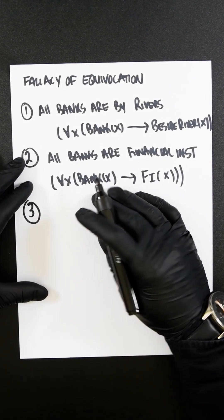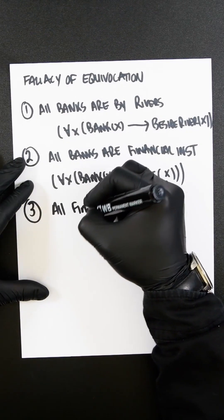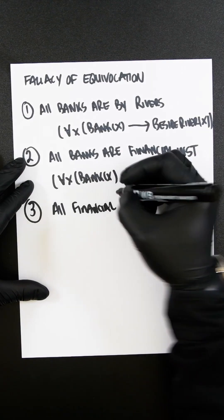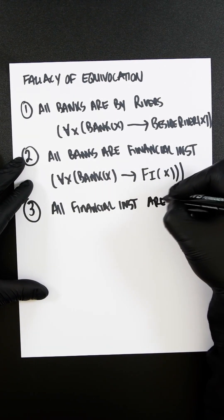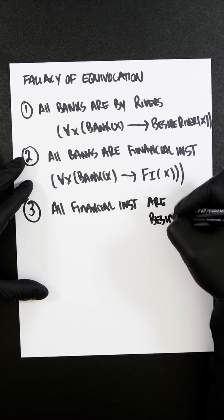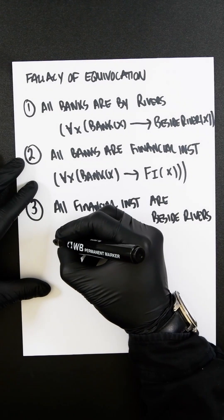This is where the fallacy comes in. So therefore, we would have all financial institutions are beside rivers. So in predicate logic,